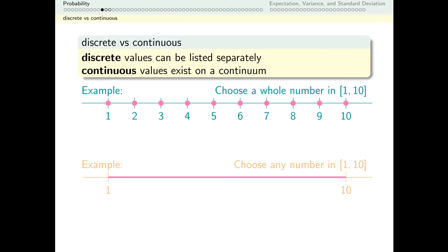On the other hand, if I can choose any number between 1 and 10, there are no gaps. I can choose 1 and 2 and every number in between. The top is what we call discrete, the bottom is what we call continuous.